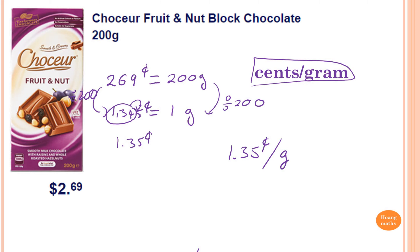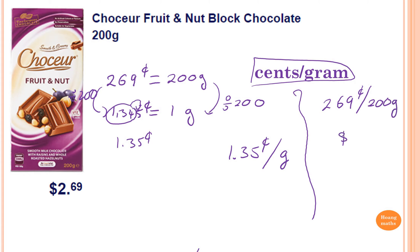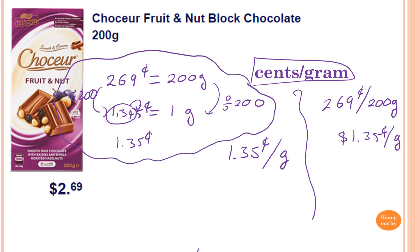You can also do it this way: just write two sixty-nine cents per two hundred grams, then divide by two hundred, giving one point three five cents per gram. Either way works. Personally, I like the first method because it's easier to understand, whereas this technique you just calculate and sort it out. Pick whichever one you like.